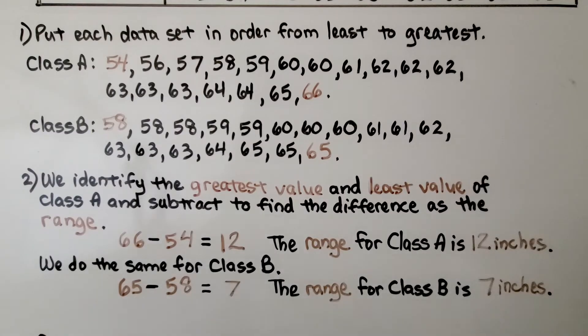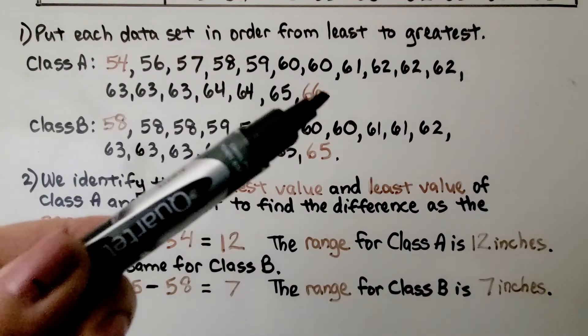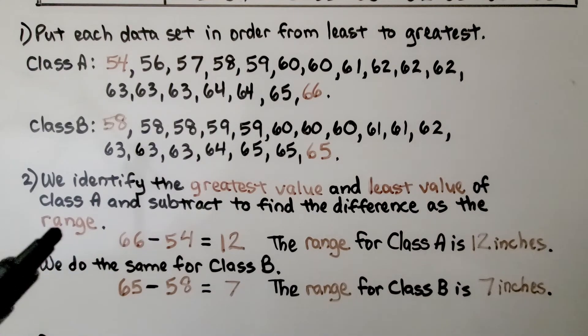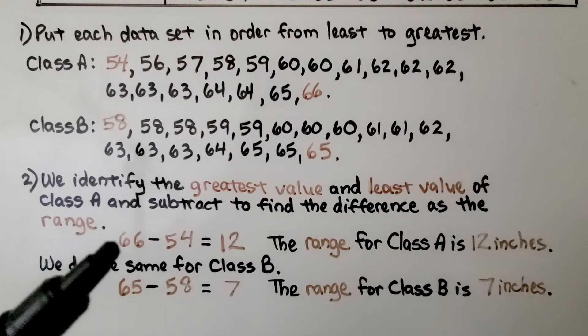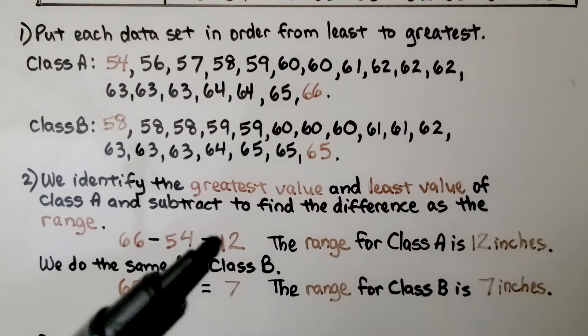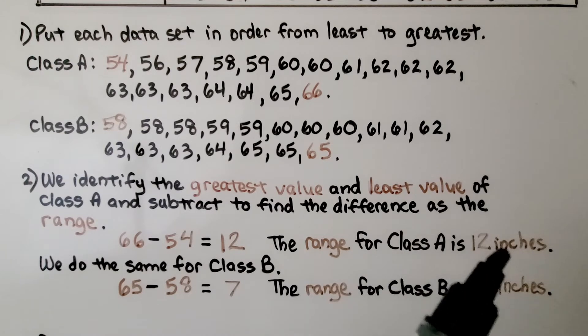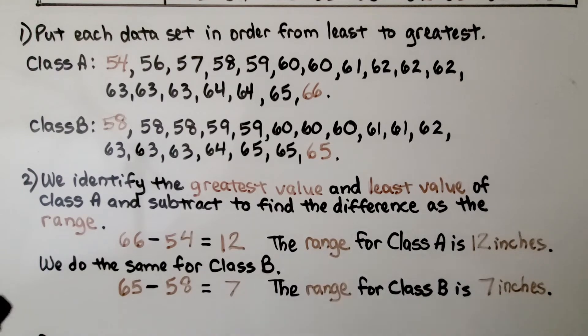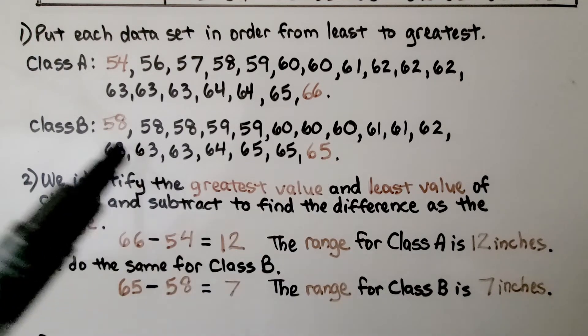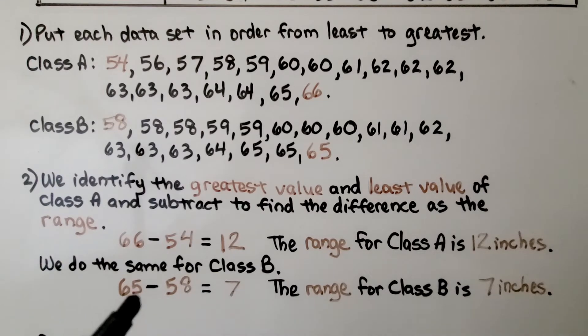The second thing we do is identify the greatest and least value of class A. We have 66 and 54, and we subtract to find the difference as the range. 66 minus 54 is 12, so the range for class A is 12 inches. We do the same for class B. We have 65 and 58. 65 minus 58 is 7, so the range for class B is 7 inches.